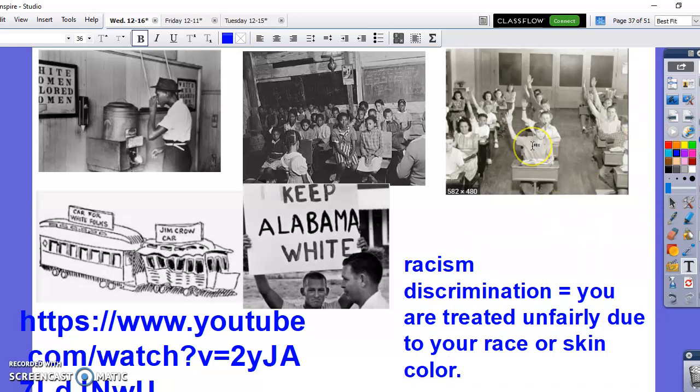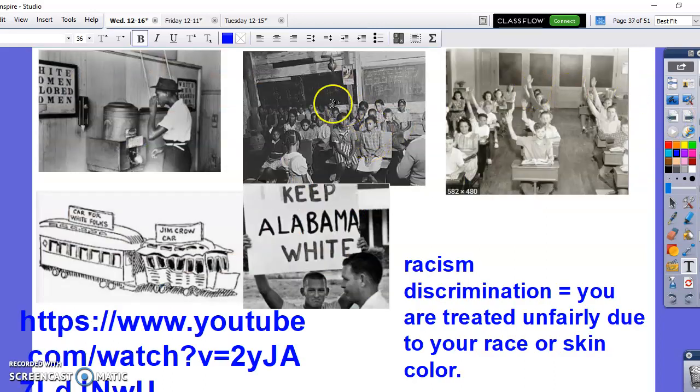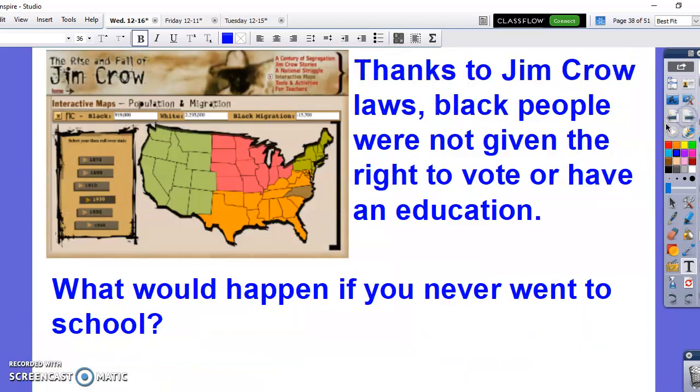So, what ended up happening was the white schools were a lot better than the black schools. They had a lot more money, better books. So, obviously, white people got a better education. But the worst part of Jim Crow laws, when they first came around, was that black people were not given the right to vote. And they didn't even get to go to school for many years. It wasn't until, like, the last 50 years, we could say, that black people were actually allowed to go to school and learn to read. Again, that's very important to the plot of the story that we're going to read.